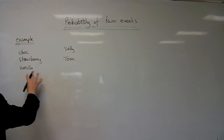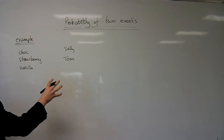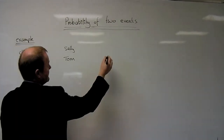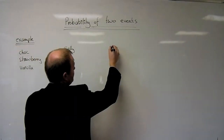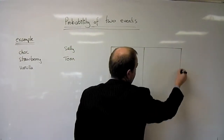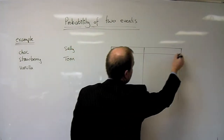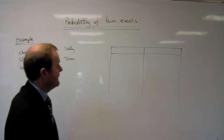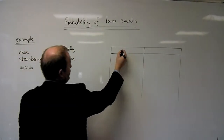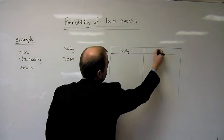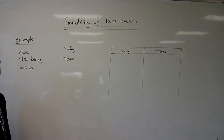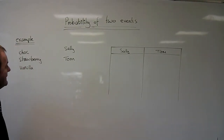It's quite difficult to look at that information and work out the answer. But if you make a grid, it makes things a lot easier. On an exam question, you might also be asked to fill out a grid to show all the different possibilities. The key when answering a question like this is to be organised in the way you think. Two events: Sally's going to choose and Tom's going to choose, so we make a table showing what they might choose.